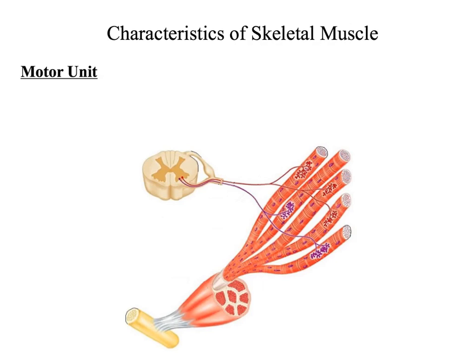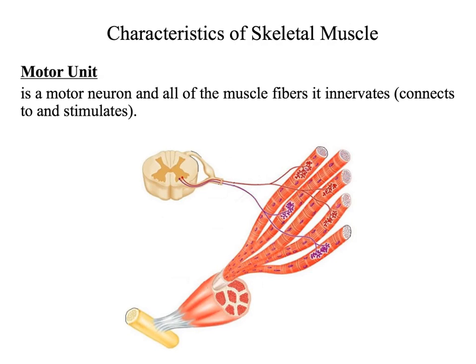In this illustration, there are two motor neurons — one purple and one red. The purple motor neuron innervates two muscle fibers, and the red motor neuron innervates three muscle fibers. We call this interaction between a motor neuron and the muscle fibers a motor unit. By definition, a motor unit is a motor neuron and all of the muscle fibers that it innervates — all of the muscle fibers it connects to and stimulates.